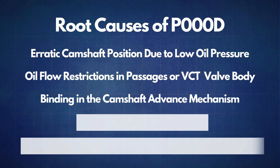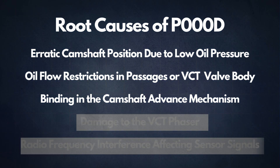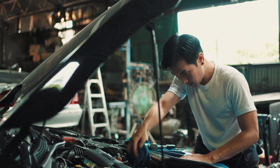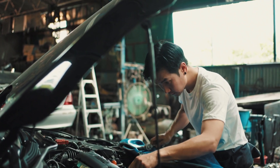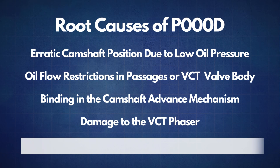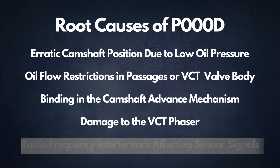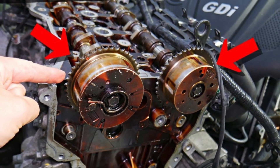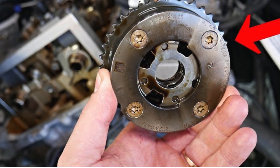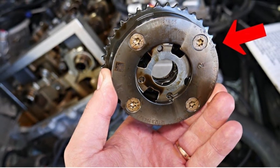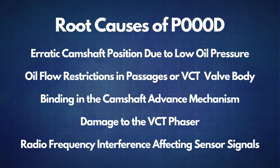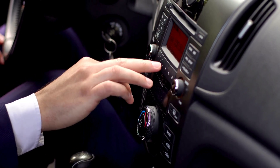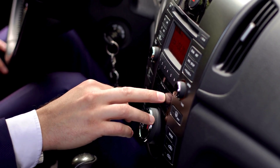The third cause is binding in the camshaft advance mechanism. If the VCT unit is binding, it may prevent the camshaft from advancing or retarding as it should, triggering the P000D code. The fourth cause is damage to the VCT phaser — a damaged phaser can result in improper camshaft timing, as it controls the angle of the camshaft. The fifth cause is radiofrequency interference affecting sensor signals. If external radiofrequency interference disrupts the camshaft sensor's readings, it can cause the ECU to register a camshaft misalignment.